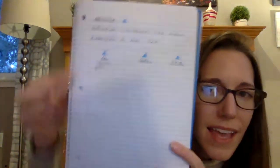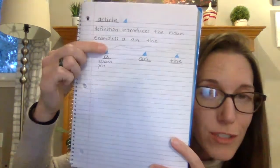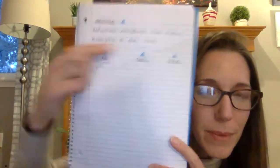Now that all of my items are sorted, I'm ready to write them down. I would write them down like this — 'a' with the symbol for that part of speech, 'an' with the symbol, and 'the' with the symbol. A spoon, a pin, an onion, an apple, the mugs, the tomatoes.